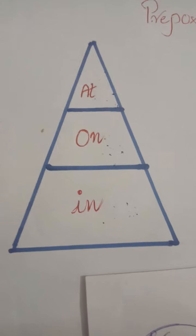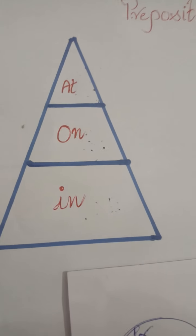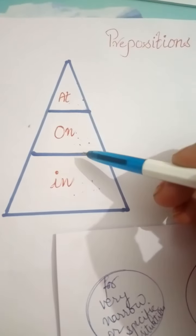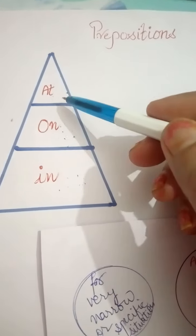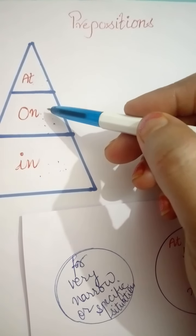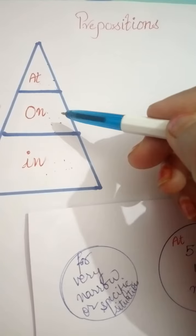Now, the second part of the triangle is a little bit wider than the first one and here is the preposition on. On is used in a little bit broader sense than at. It's used for one day or one date.